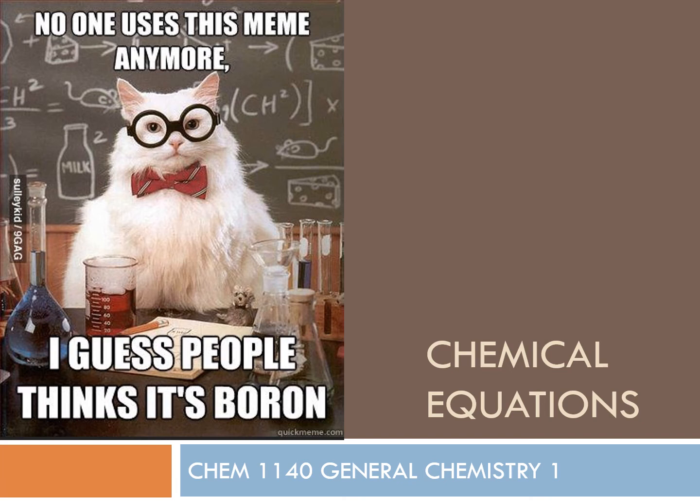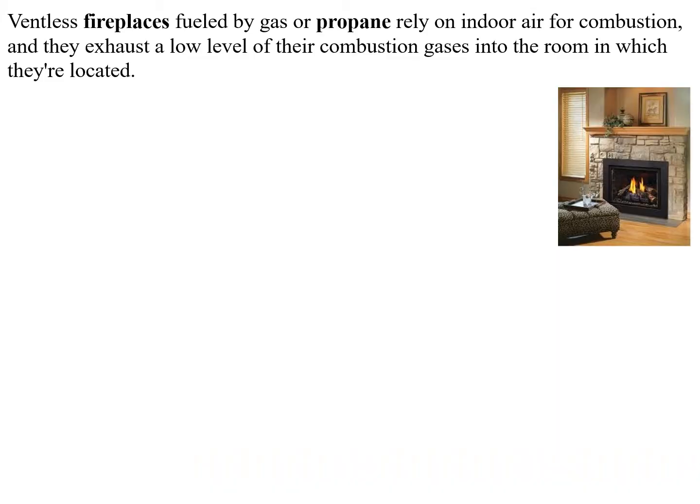I'm going to explain some strategies for balancing chemical equations, but first let's start by explaining what chemical equations are. Chemical equations are the language of chemistry when we're trying to describe a phenomenon. In normal English, you would say that a fireplace burning propane is operating a combustion, producing CO₂, and needing a proper supply of oxygen to avoid producing carbon monoxide.